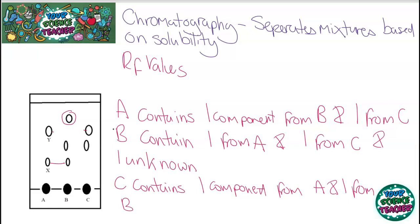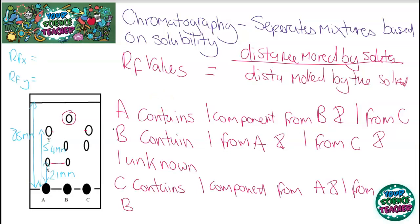So what you do to calculate an RF value is you do the distance moved by the solute divided by the distance moved by the solvent. I've added some numbers to the chromatogram so that we can now quantitatively analyze it. And if we look at spot X first, you can see that the spot has moved 21 millimeters. So to work out its RF value, you do 21 millimeters divided by the distance moved by the solvent, which is the distance between the baseline and the solvent front. And that's 85 millimeters. And then for the RF value of spot Y, you do 54 millimeters divided by 85 millimeters as well. And that gives me an answer of 0.25 and 0.64 respectively.